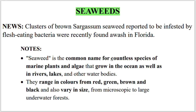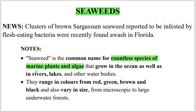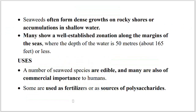Seaweed is a common name for countless species of marine plants and algae that grow in the ocean as well as in rivers, lakes and other water bodies. They range in colors from red, green, brown and black and also vary in size from microscopic to large underwater forests. Seaweeds often form dense growths on rocky shores or accumulations in shallow waters. They show a well-established zonation along the margins of the seas where depth of the water is 50 meters.